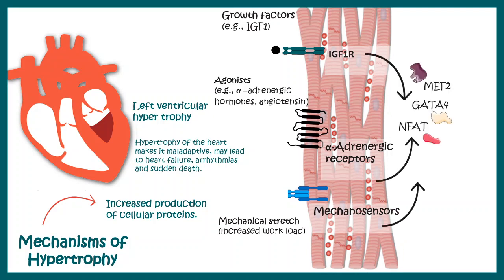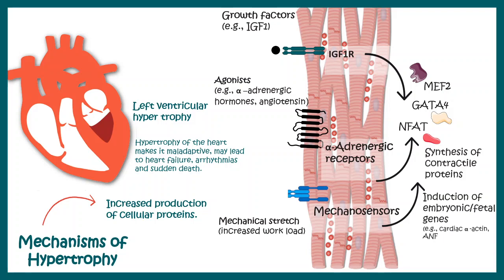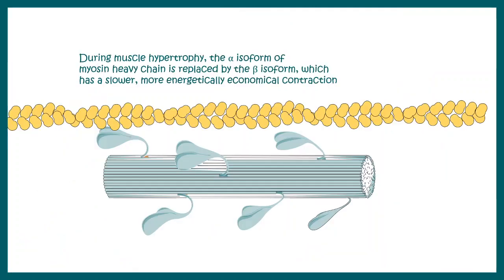All these things lead to the production of a bunch of transcription factors such as MEF-2, GATA-4, and L-FAT. These can evoke several biological responses, such as synthesis of contractile proteins and induction of specific embryonic genes such as alpha-actin and ANF. One such response is replacing the alpha-isoform of myosin heavy chain with the beta-isoform, which has a slower, more energetically economical contraction. These kinds of changes underlie cardiac hypertrophy.